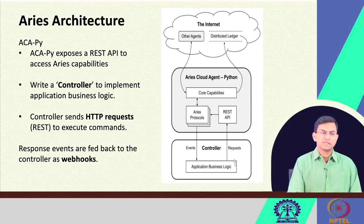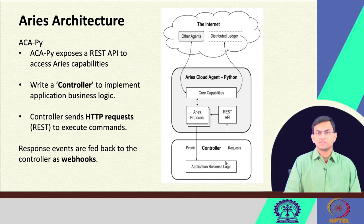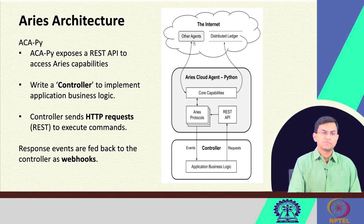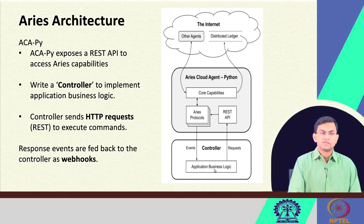When you send HTTP requests you get HTTP responses back, but those are instant responses to certain commands. It may happen that your controller is running and, without you issuing any request, some other Aries agent is trying to connect to you — perhaps sending you a credential request or a presentation. A request coming from other agents goes to the core capabilities and then to the Aries protocols, and Aries needs to inform the controller of that incoming event using webhooks. So our controller needs to implement both an HTTP client to send HTTP requests and an HTTP server to receive webhook events.